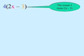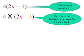Another one is 4 bracket 2x minus 3, close bracket. Which becomes 4 times bracket 2x, take 3, close bracket.